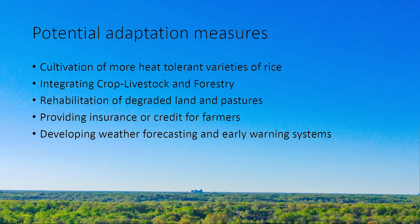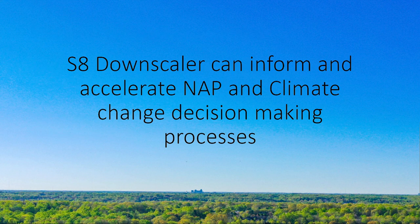Rehabilitation of degraded land and pastures surrounding the rice terraces can also be an effective way of reducing local temperatures. Alternatively, measures such as providing insurance and credit for farmers or improving early warning systems can also be beneficial. We have only looked at the impact of temperature under the different RCP scenarios on future rice production. However, rice production is affected by several other climatic variables. This demonstration simply shows one of the many ways in which the S8 downscaling tool can be used for the NAP process. Other factors such as humidity, precipitation and solar radiation can also be analyzed using the S8 Downscaler, which can not only inform but also accelerate the NAP process and any other climate change decision-making processes.